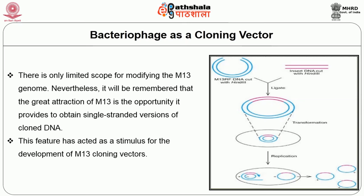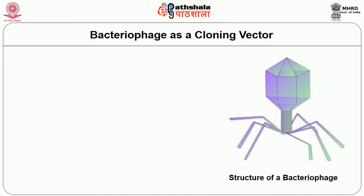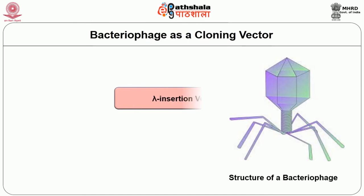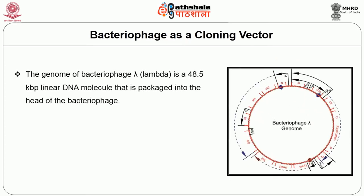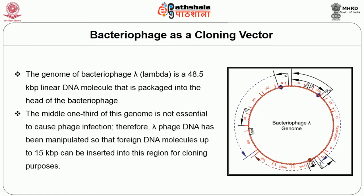The first two types of vectors produced were lambda insertion and lambda replacement or substitution vectors. The genome of bacteriophage lambda is 48.5 kb of linear DNA packaged into the head of the bacteriophage. The middle one-third of this genome is not essential to cause phage infection. Therefore, lambda phage DNA has been manipulated so that foreign DNA molecules of up to 15 kbp can be inserted into this region for cloning purposes.